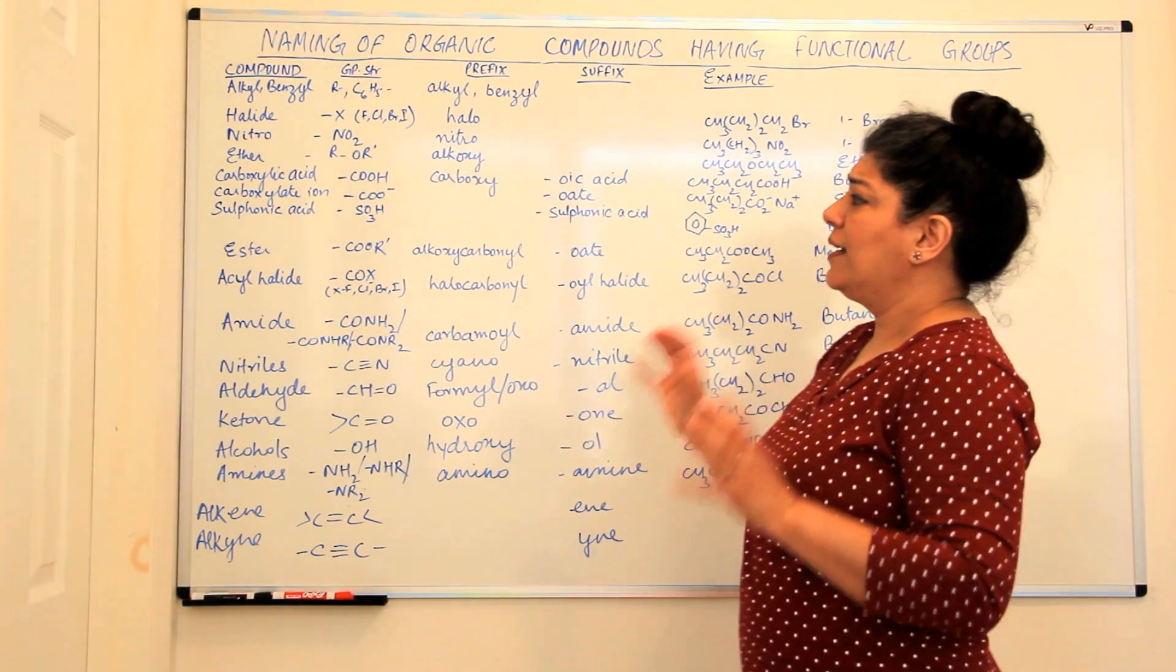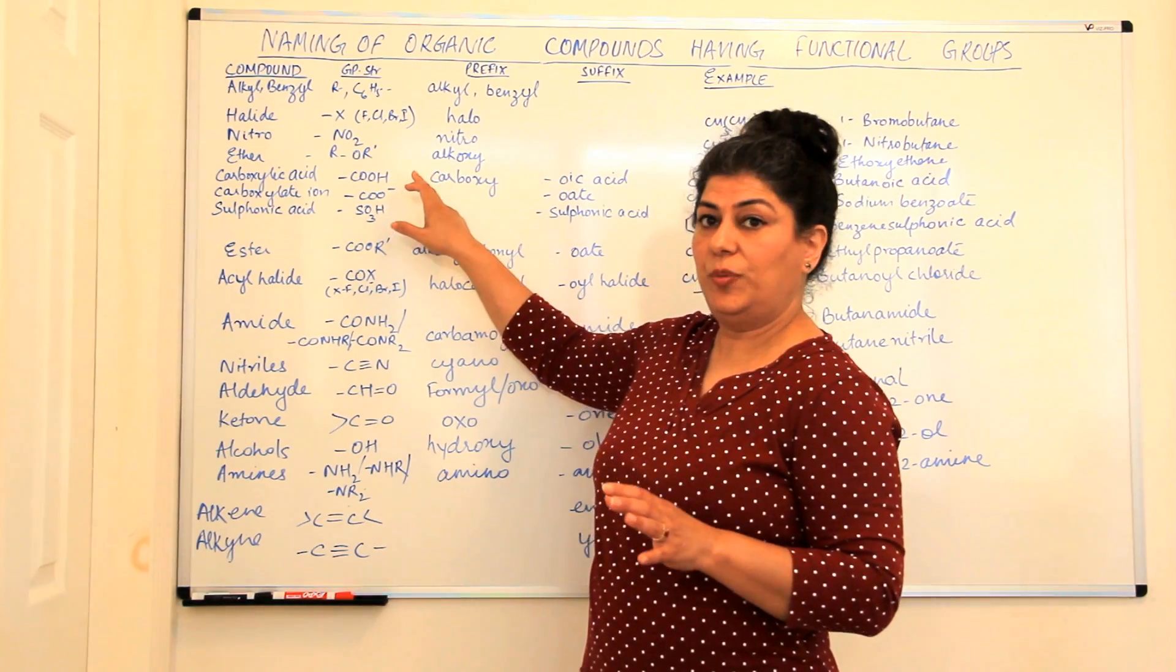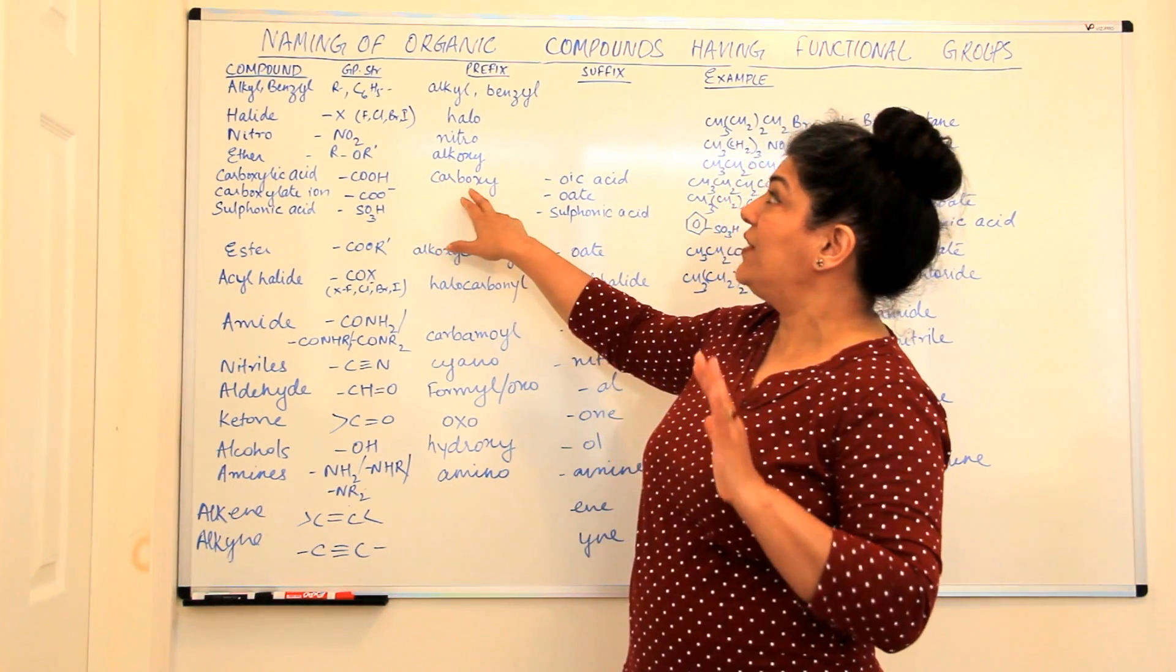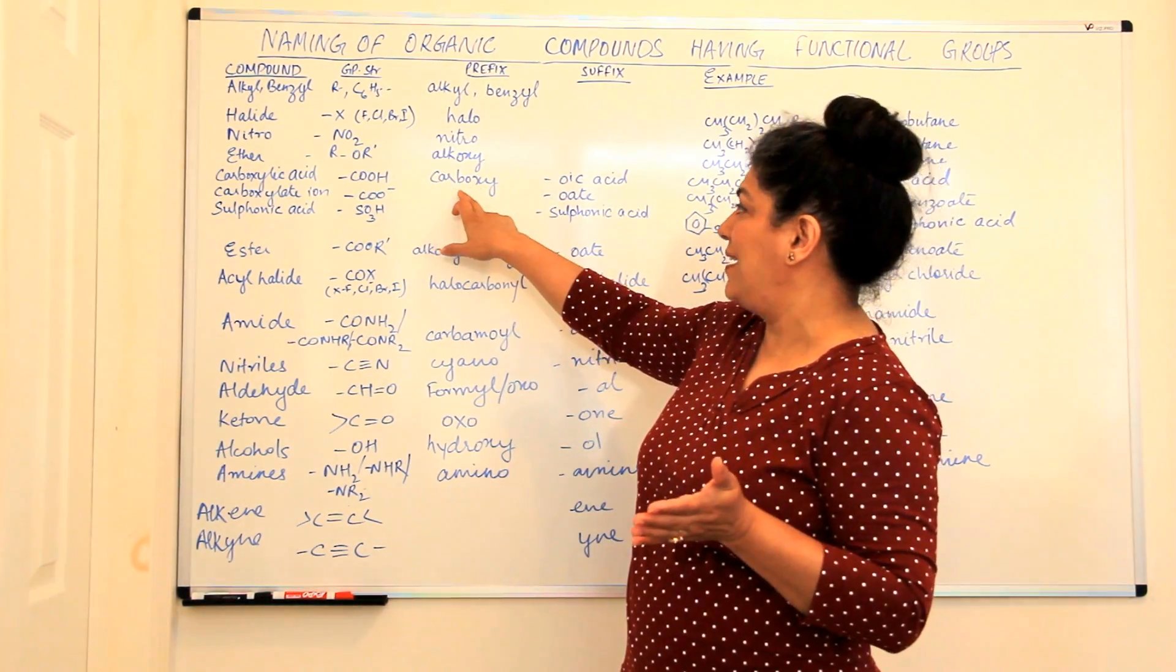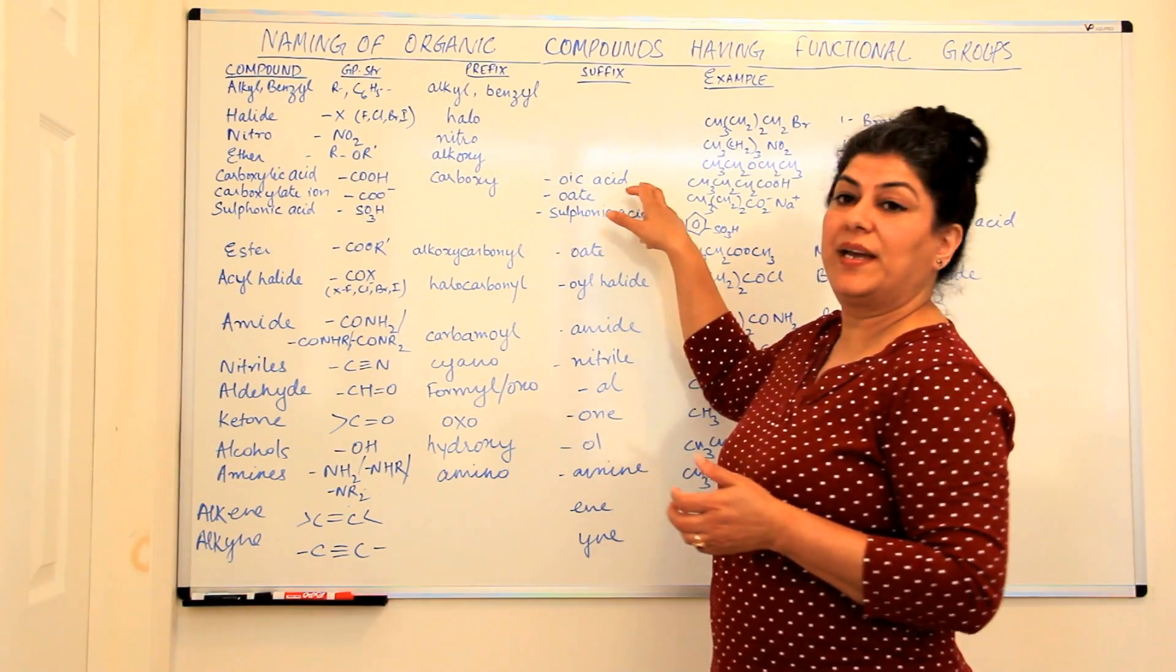After this come the carboxylic acid which is COOH group. It is written as, if it is written as a prefix, it is a carboxy and if it is written as a suffix, it is oic acid.